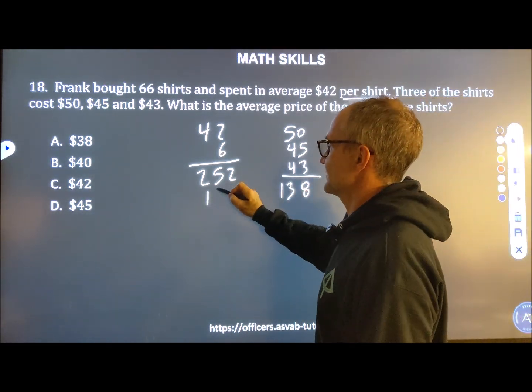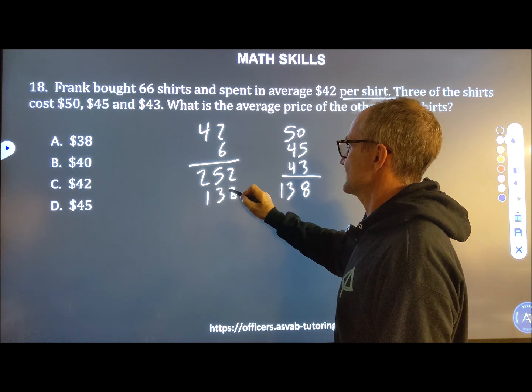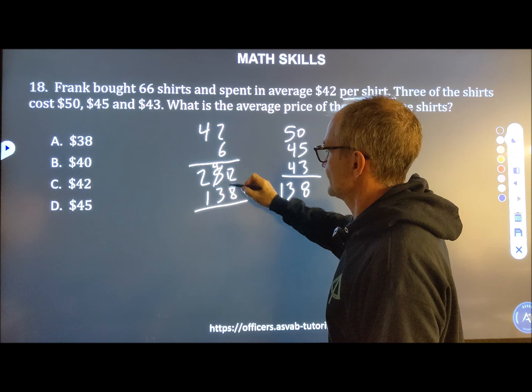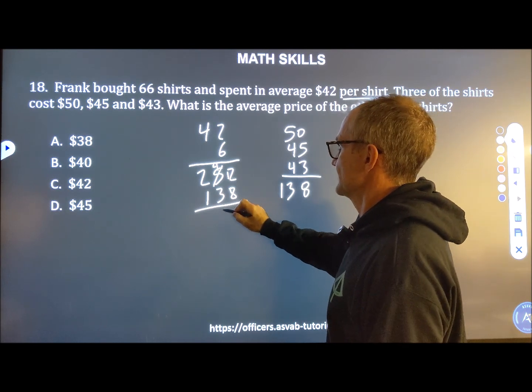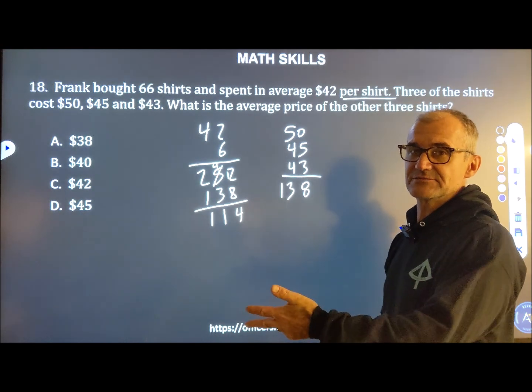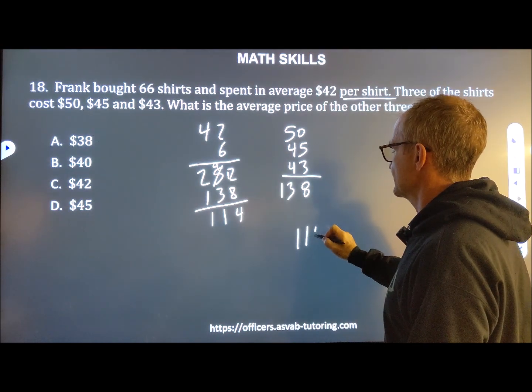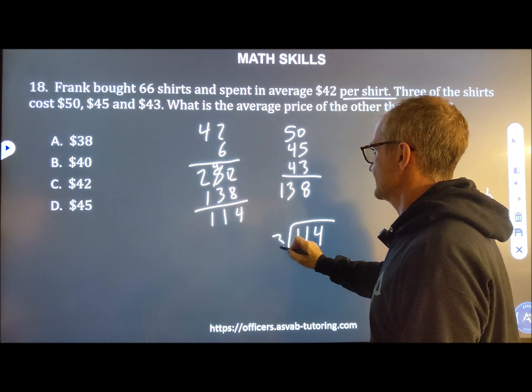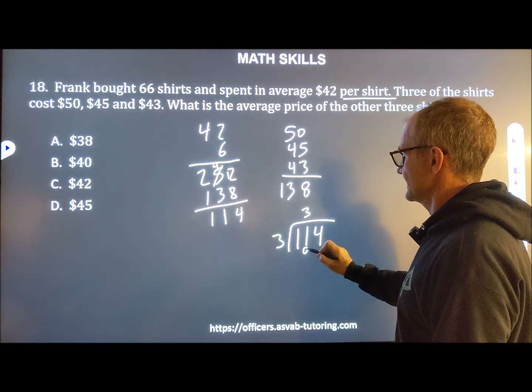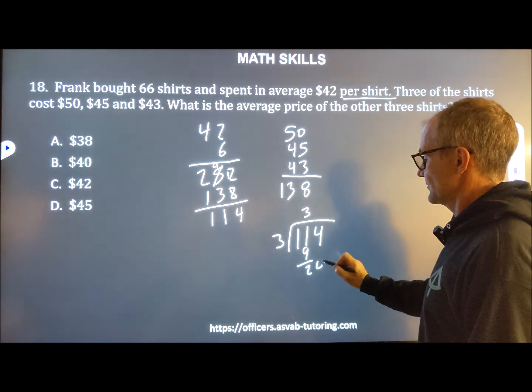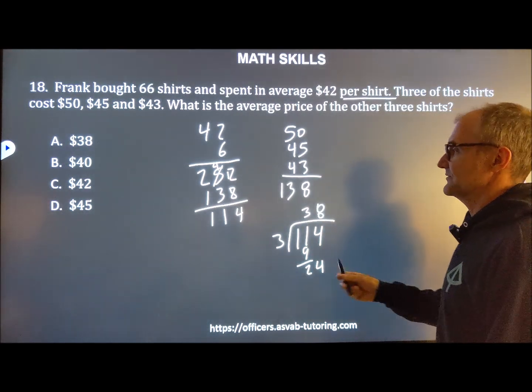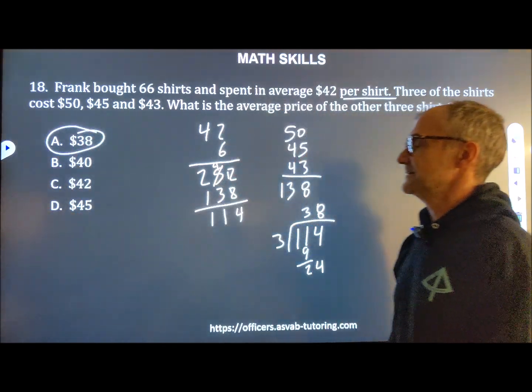You spent a total of 252 on them. I'm going to subtract that 138 from there. 12 minus 8 is 4. So you spent 114 on the remaining three of them. 114 divided by 3. 3 goes into 11 three times to give me 9. Bring down the 4, 24, 38. So the average price per shirt is $38 a shirt. Answer A right there.